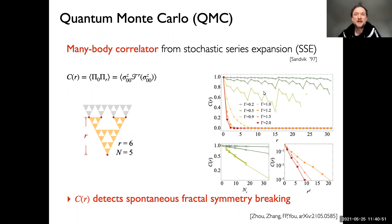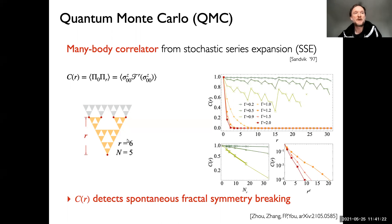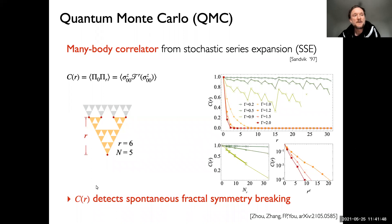As shown here, depending on R the number of non-trivial operators in the many-body correlator differs. We find that in the symmetry-broken phase the expectation value goes to zero with the number of non-trivial operators, and for a fixed number of operators it approaches a constant with respect to the size of the Sierpinski triangle. In the paramagnetic phase, it goes to zero exponentially with a stretched exponential, where d is the fractal dimension of the Sierpinski triangle. We now have a many-body correlator that detects spontaneous symmetry breaking.